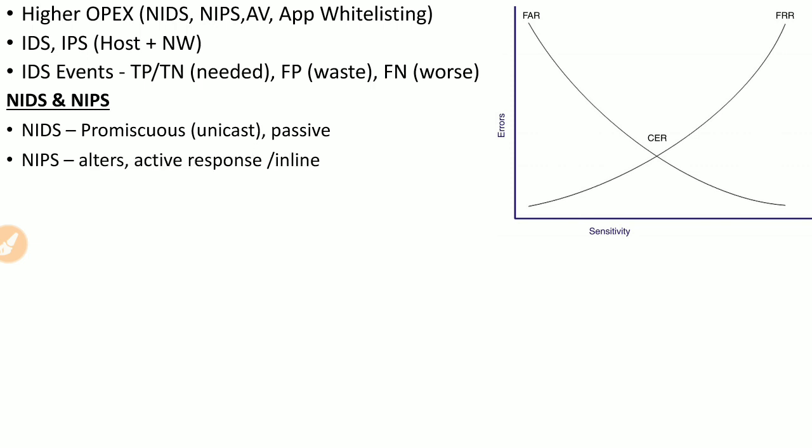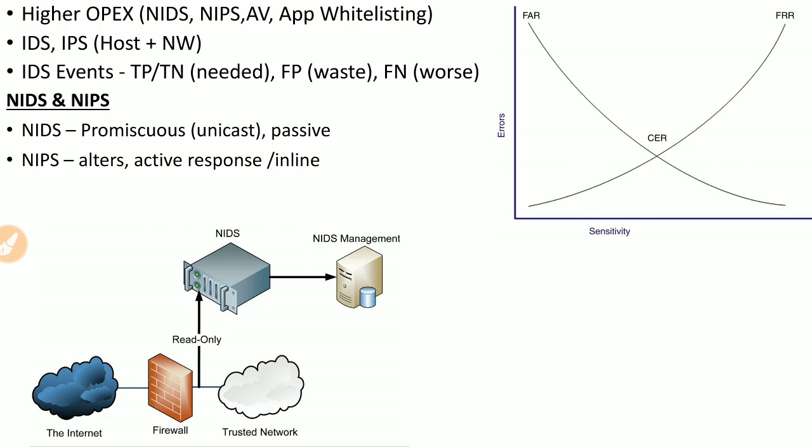Network-based IPS actually interferes with and may alter network traffic. There are two deployment models: active response and inline. The network-based IDS is deployed in read-only mode, sniffing traffic in promiscuous mode and sending alerts to an NIDS management server without interfering with traffic.